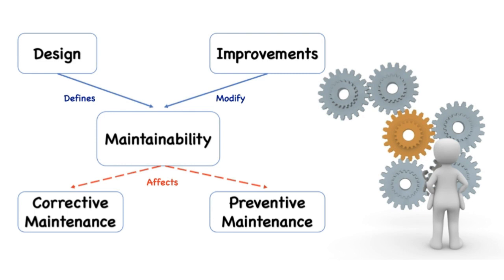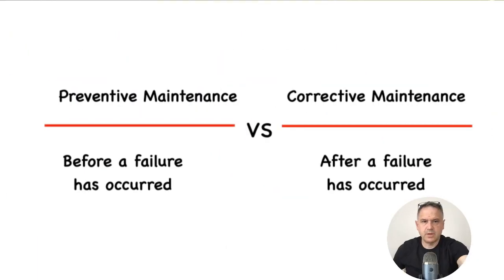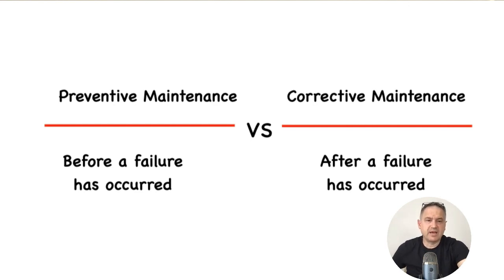Then you may ask a simple question: what is corrective maintenance, and what is preventive maintenance? It's all about either before failure or after failure. If it is a maintenance procedure before a failure, we call it preventive maintenance. If a failure occurred and then we try to fix the system, equipment, or product, then we are talking about corrective maintenance procedures. Before a failure has occurred — preventive. After a failure has occurred — corrective maintenance. So far, so good.